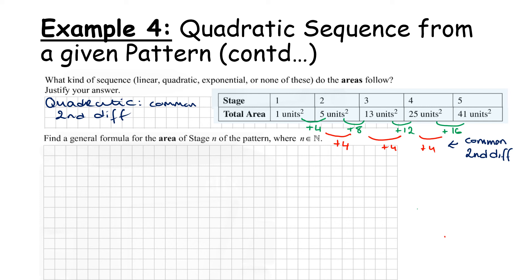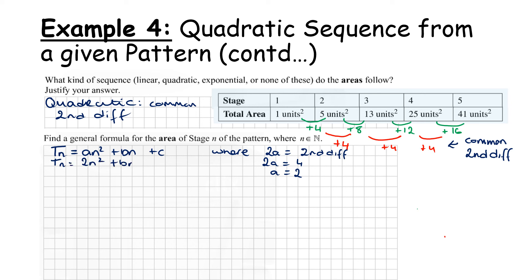Now find the general formula for the area of stage n. We know it's quadratic, so Tn = An² + Bn + C where 2A equals the second difference. Here 2A = 4, so A = 2. We can rewrite as Tn = 2n² + Bn + C. Taking T1: 2(1²) + B(1) + C = 1, giving 2 + B + C = 1, so B + C = −1. That's equation 1.